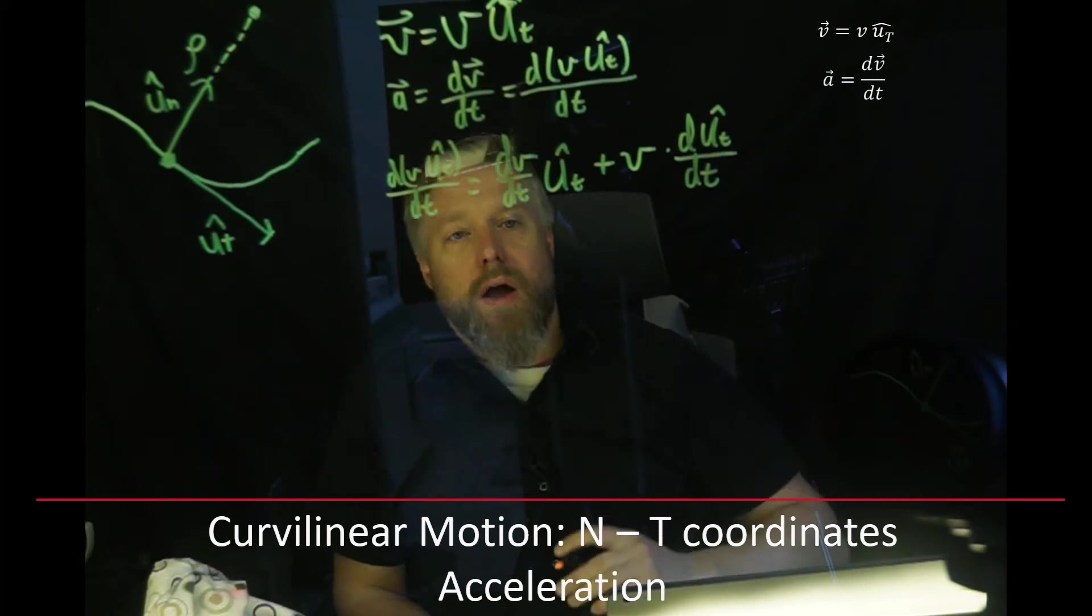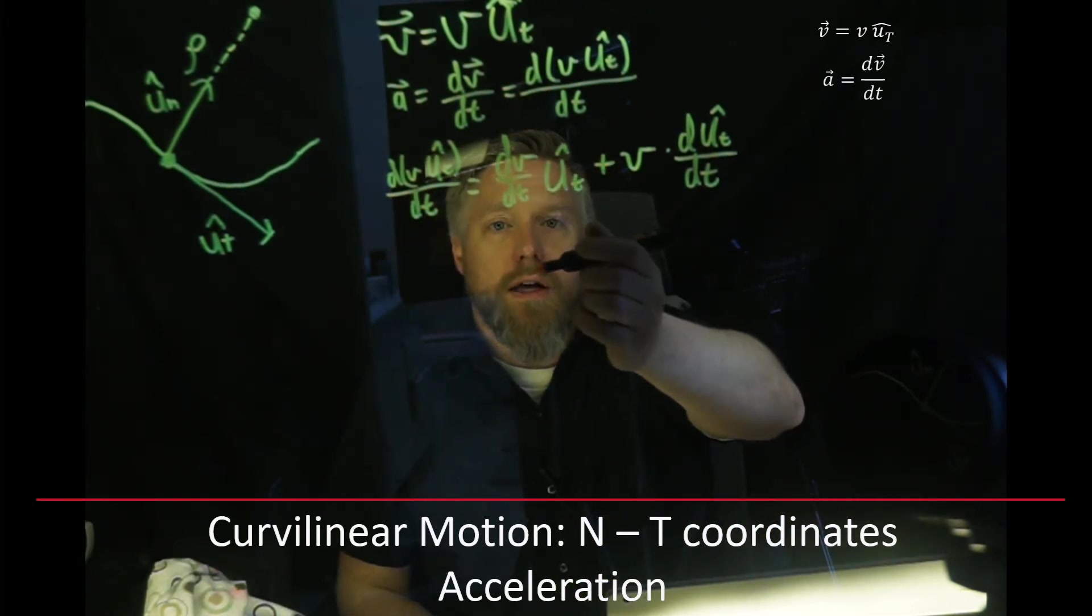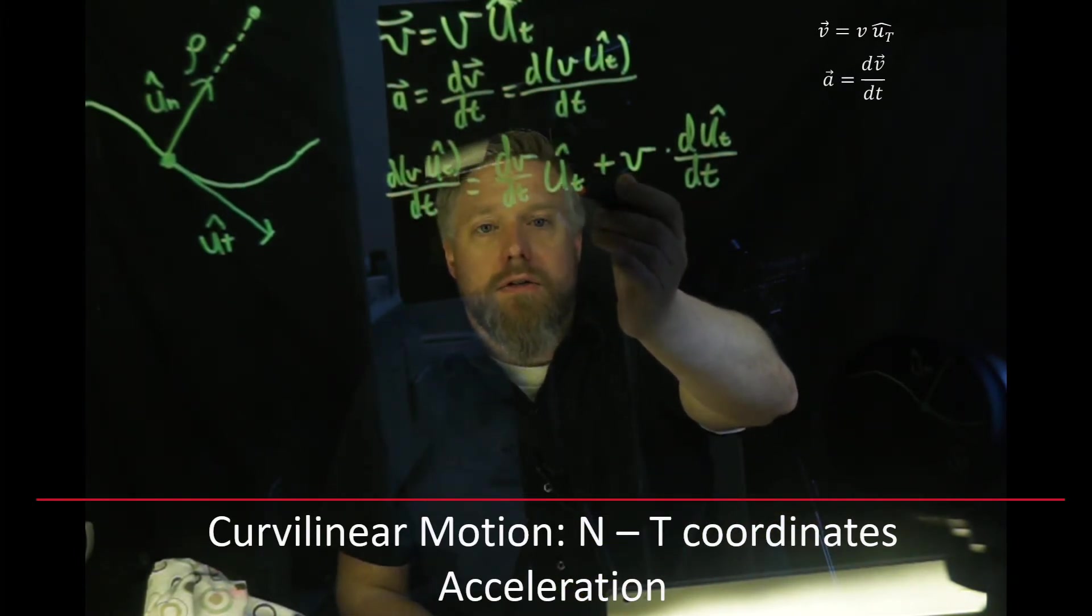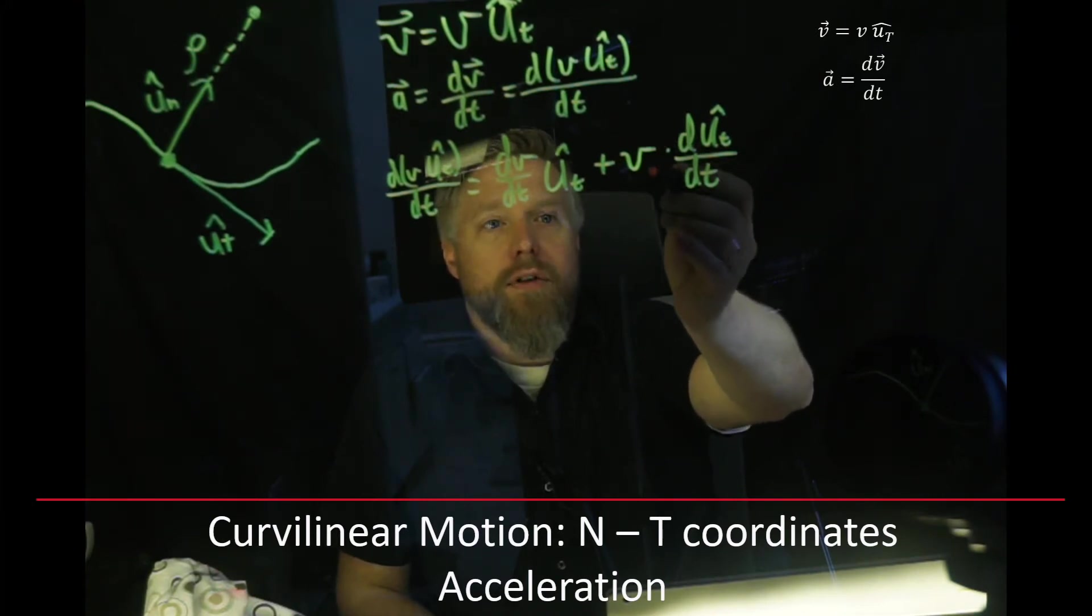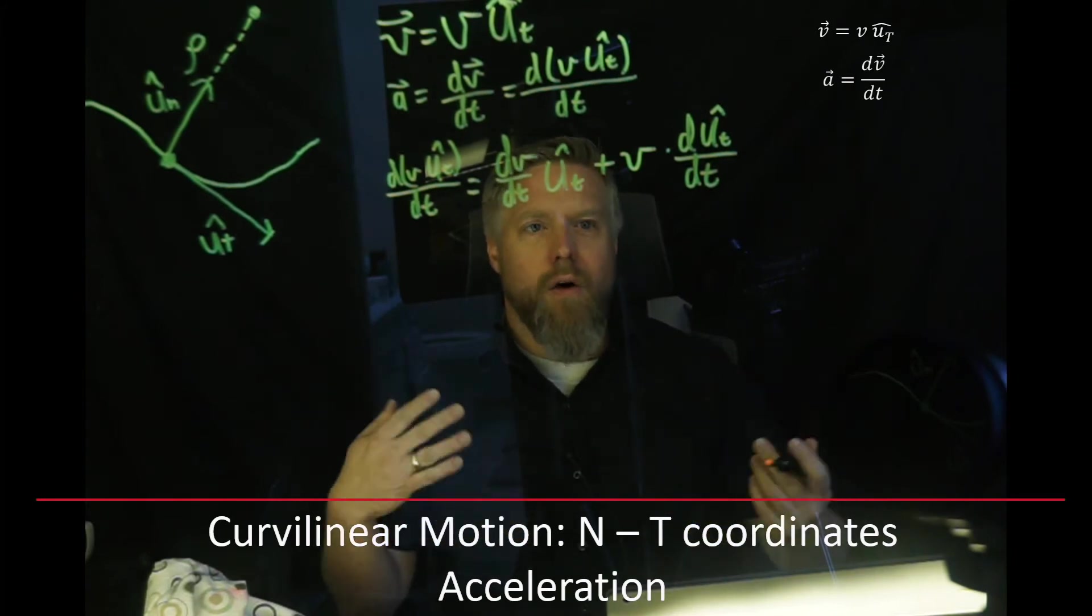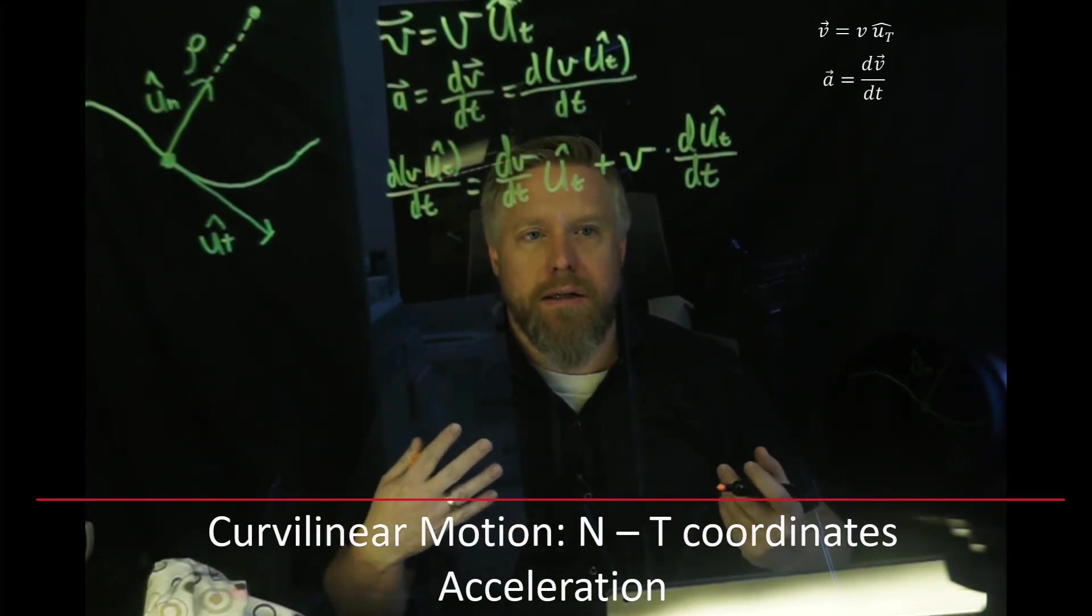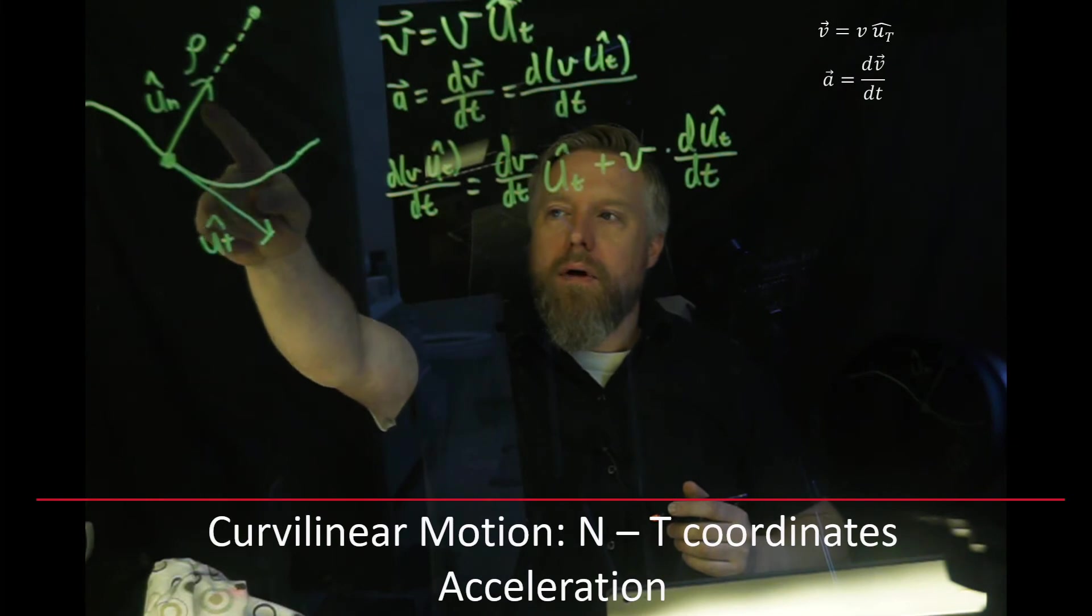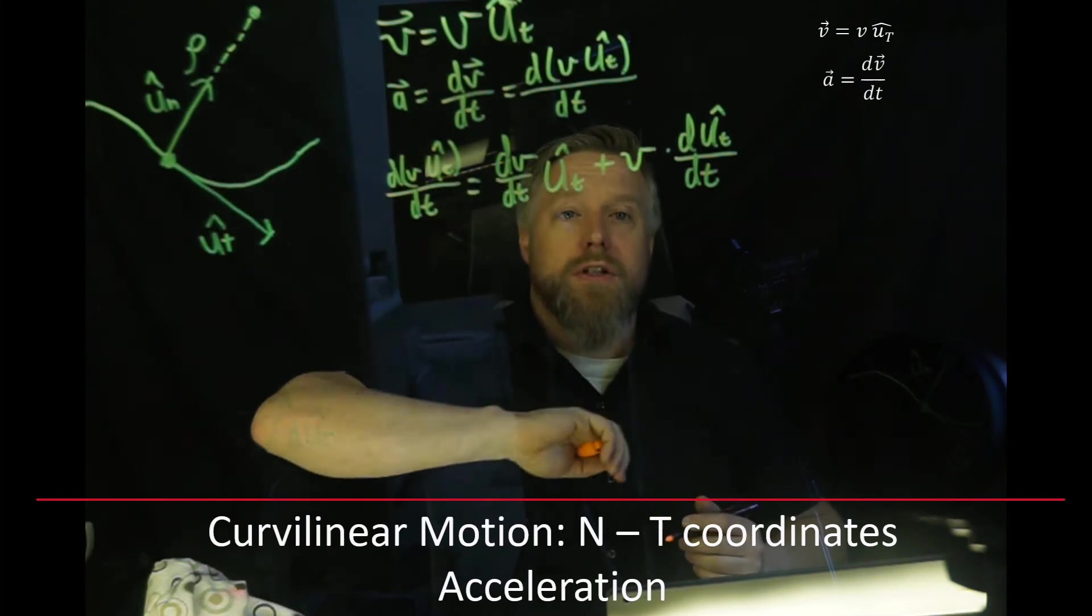That wasn't so hard using the product rule. Now what we have to do is figure out what it means. The first term, I think we know what that means, dv/dt is the rate of change of velocity in the tangential direction. The second term, we have velocity, but then we have this dUT/dt. Let's tackle that. Let's figure out what is dUT/dt. And to do that, I'm going to use my, well, we know the definition of it.